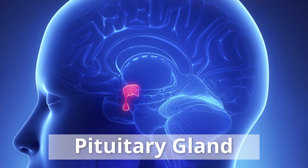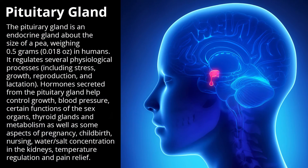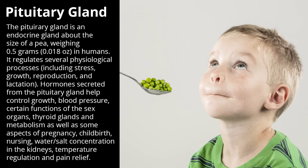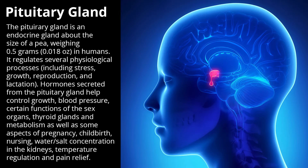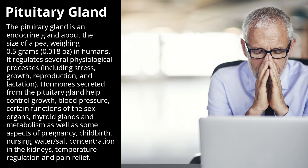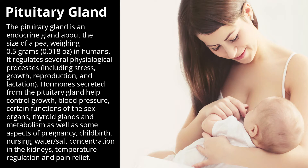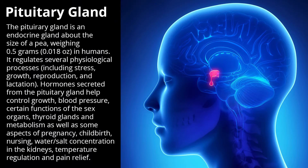The pituitary gland, considered the master gland, is an endocrine gland about the size of a pea, weighing 0.5 grams in humans. It regulates several physiological processes including stress, growth, reproduction, and lactation. Hormones secreted from the pituitary gland help control growth, blood pressure, certain functions of the sex organs, thyroid glands, and metabolism.